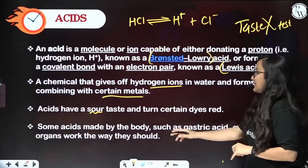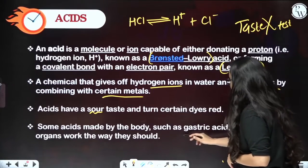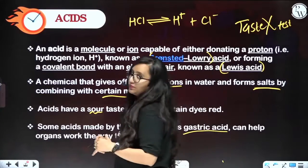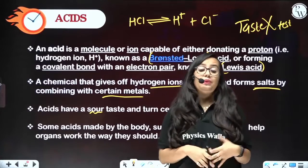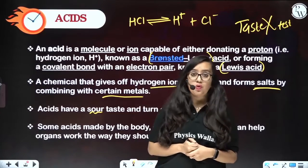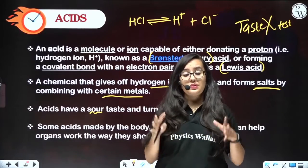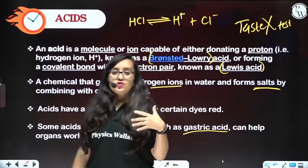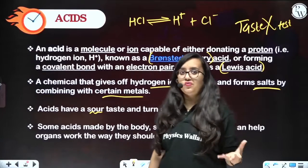Some acids are made by the body, such as gastric acid. Gastric acid can help organs work the way they should. There is also acid present in our stomach which helps in digesting food. HCl is present in our body which helps in digesting and breaking down the food and making it bacteria free. So this way acids can also be our friends.